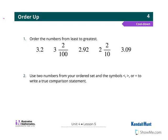Hi guys, this is the Unit 4 Lesson 5 cool down, Order Up. For this cool down you have to order the numbers from least to greatest. That means your smallest decimal all the way to your greatest.